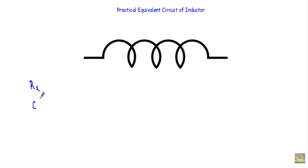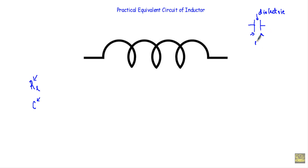Let me describe how we get the stray capacitance C and the resistance between the turns RL. If you are familiar with the parallel plate capacitor, you will see we get it by inserting a dielectric or insulating medium between two metal or conducting plates. As a dielectric we can use air, wood, rubber, or any kind of insulating material that does not allow current to flow through this region.